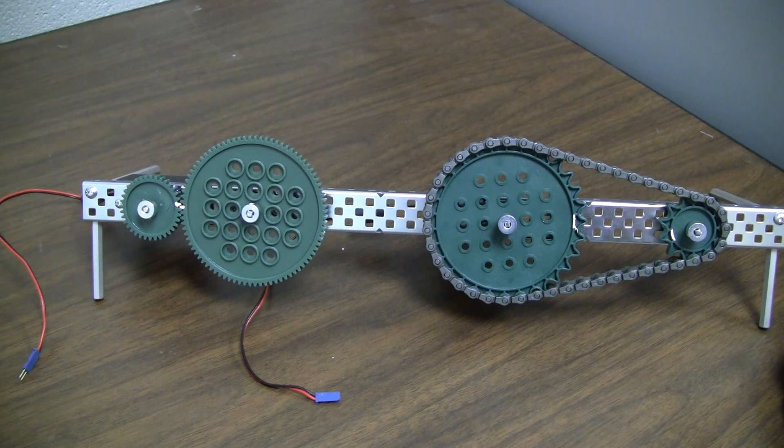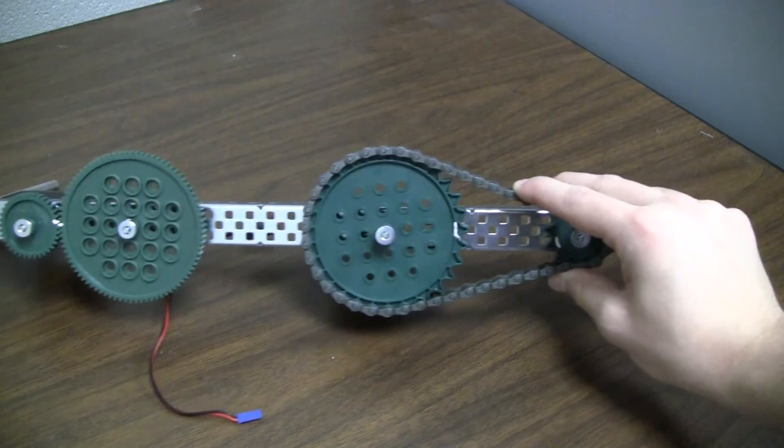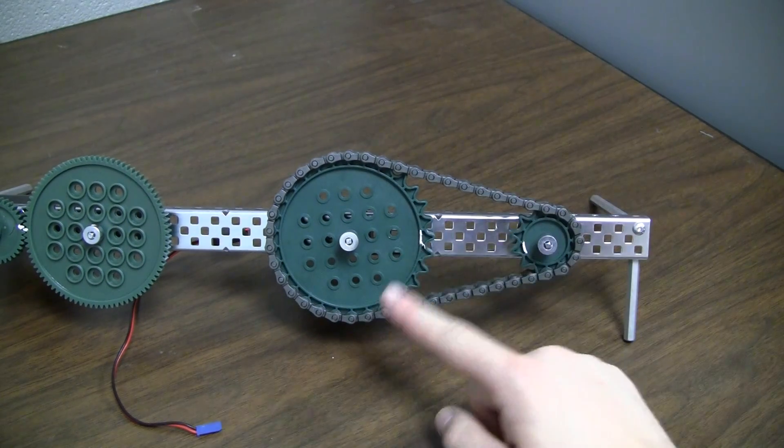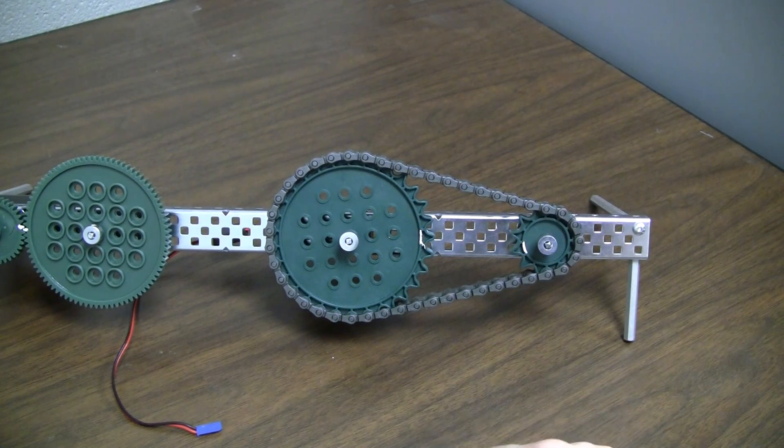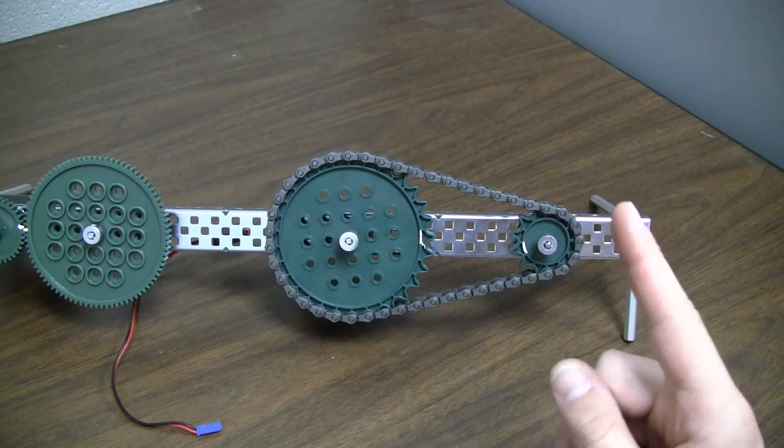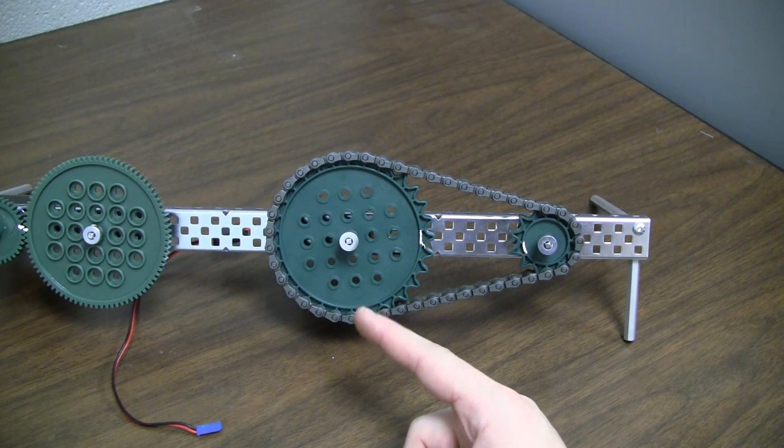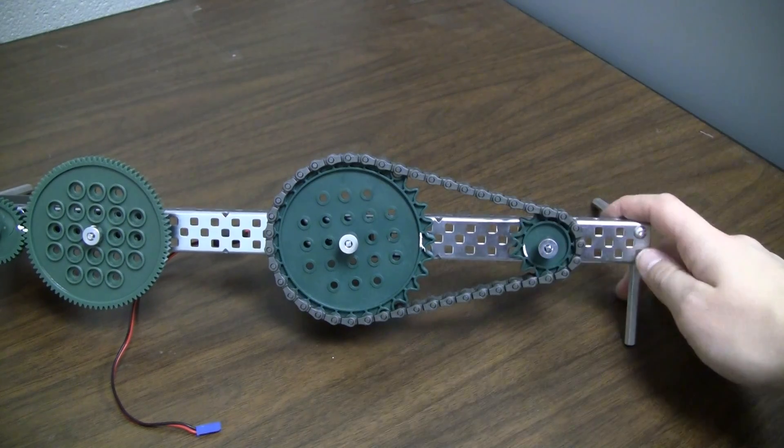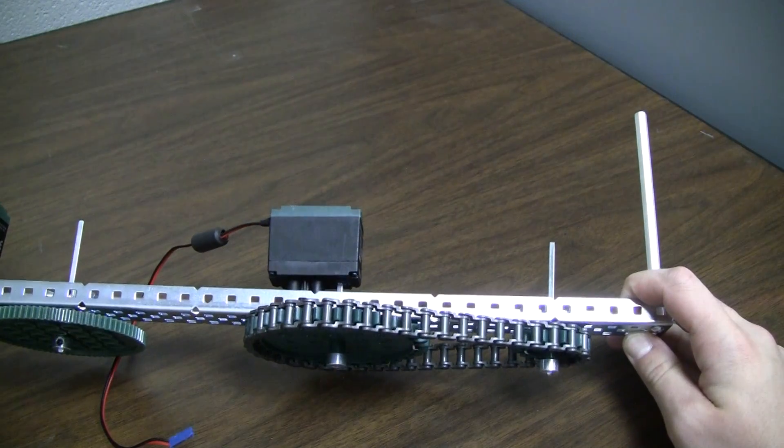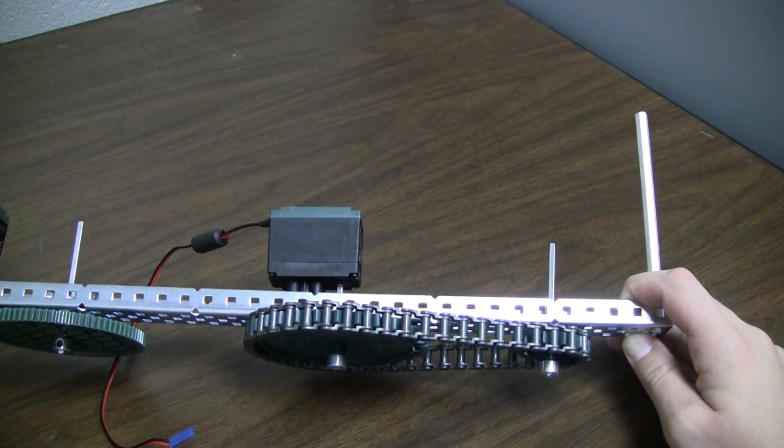Now onto the gearing up example. This is a large gear turning a small gear. The way I know that this large gear is turning the small gear rather than the small gear turning the large gear is because the large gear is the drive gear. It is the drive gear because you can see that it is connected to the motor.